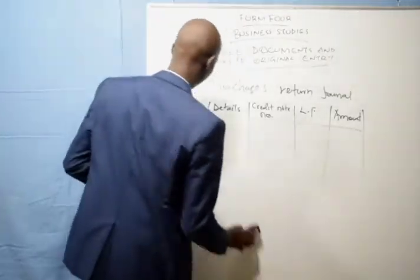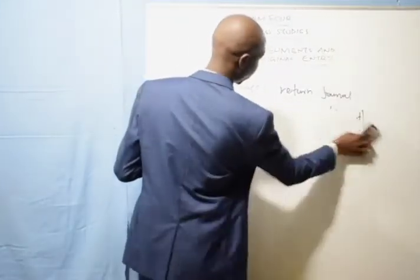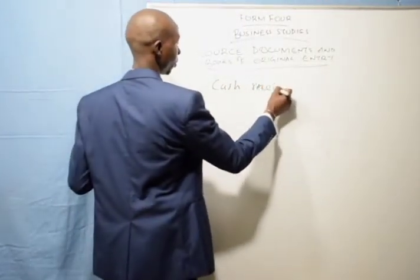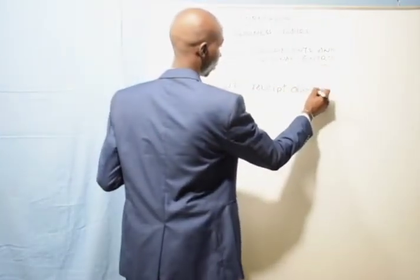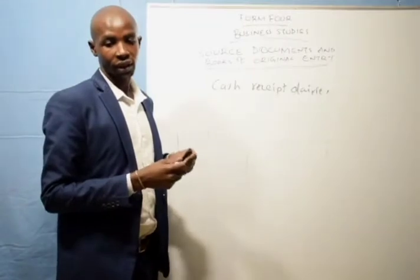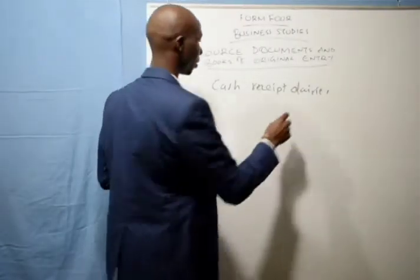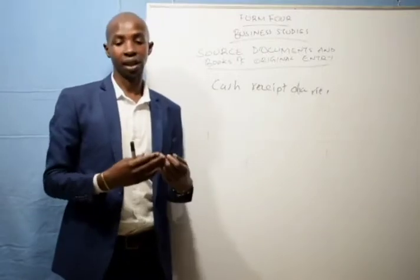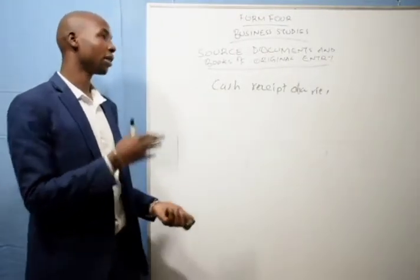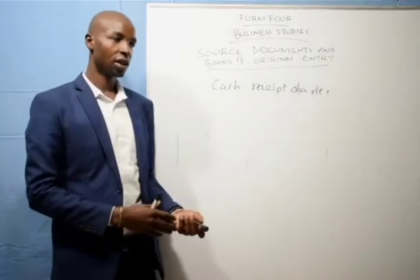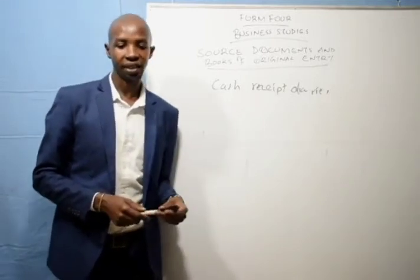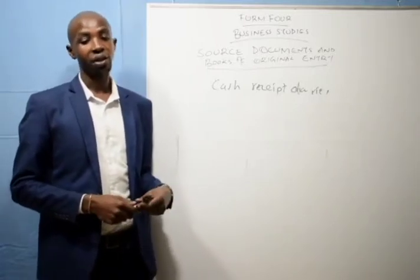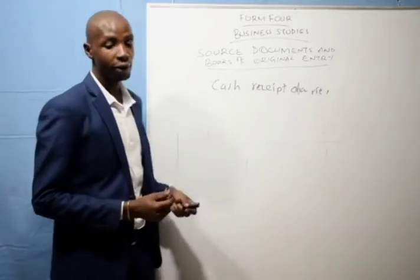The fifth book is the cash receipts journal. A diary is a book which we use to keep our personal information according to the day for planning purposes. Similarly, the cash receipts journal is used to record all cash and checks that have been received by the business.